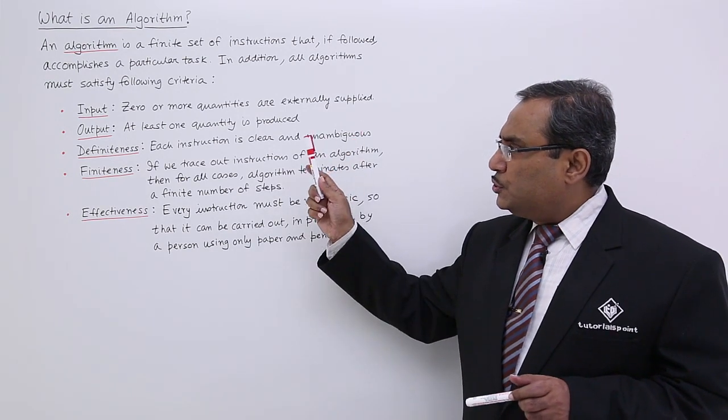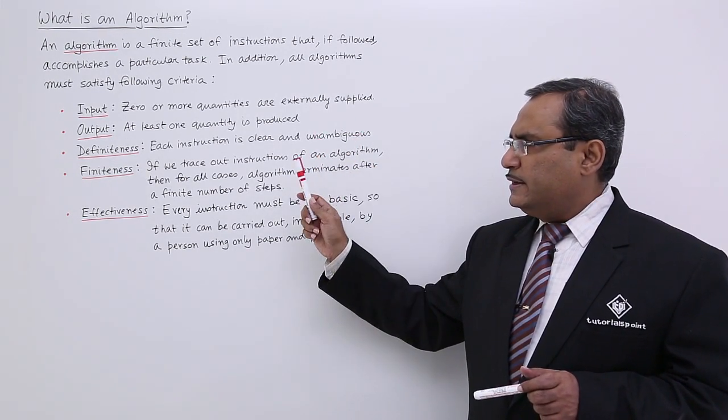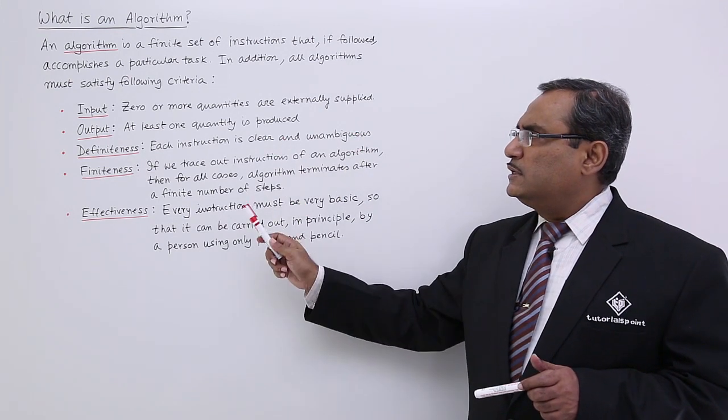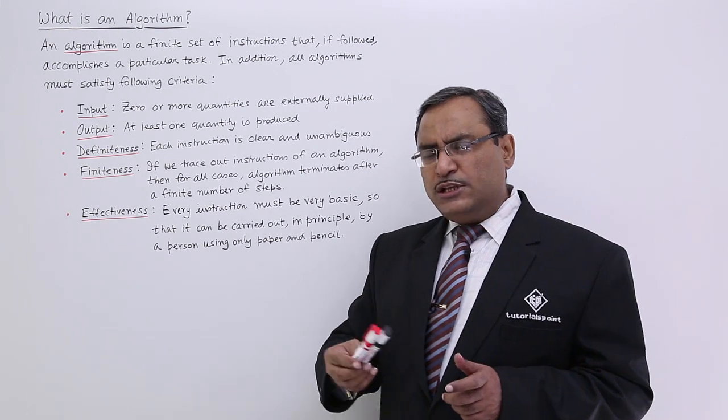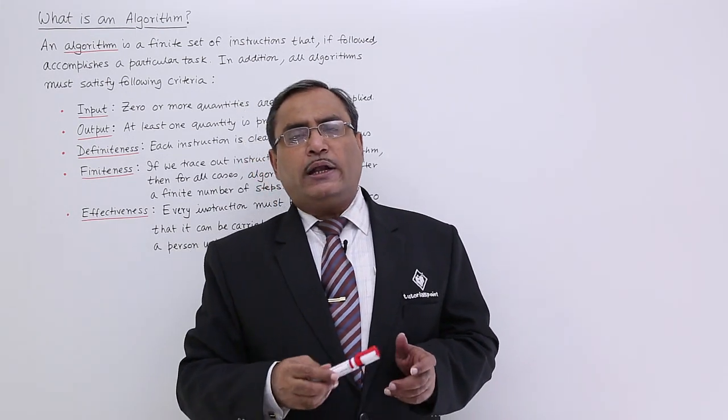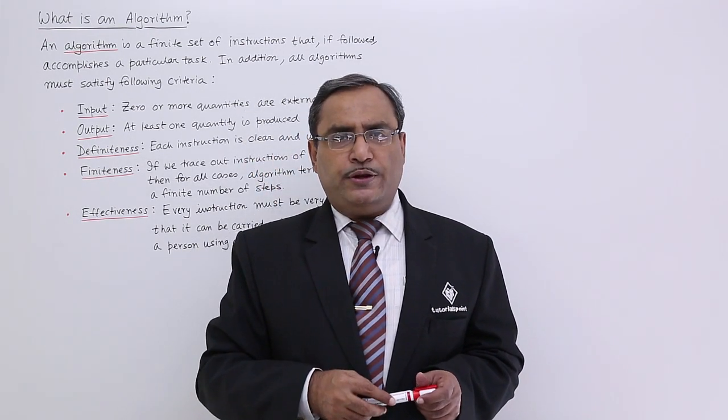Input, output, definiteness, finiteness, and effectiveness—these are the five properties an algorithm should have. In this way, we have defined what an algorithm is. Thanks for watching this video.